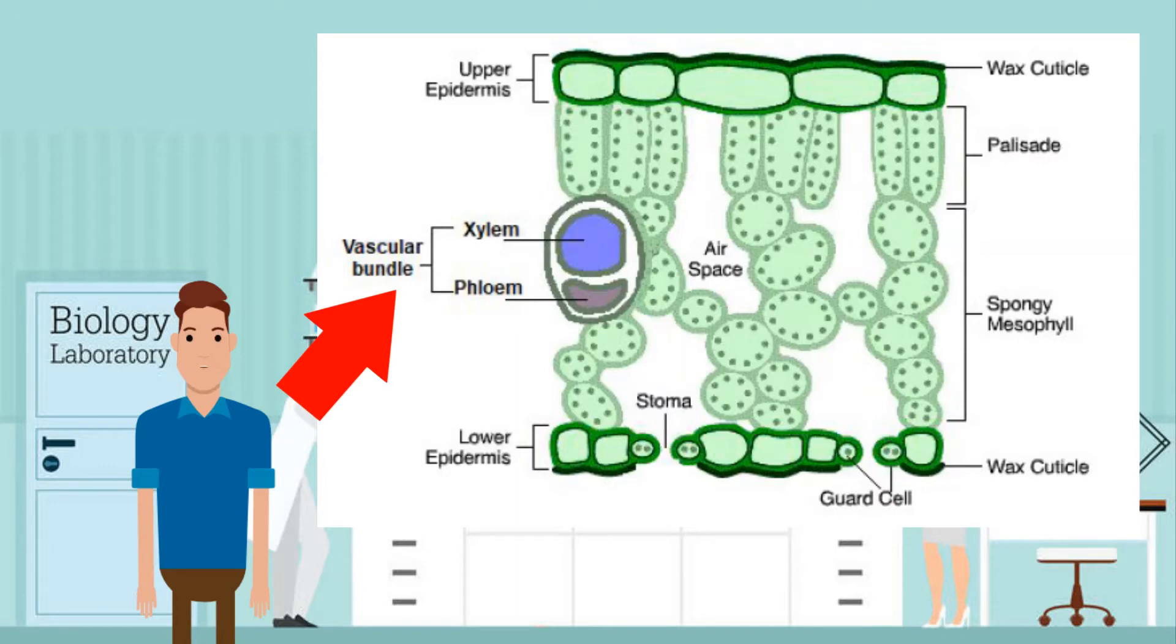Next, the vascular bundle. The bundle of tubes that are responsible for transport around plants includes xylem, which are vessels that transport water and mineral salts. Xylem walls are tough and hard so they are also used to support the whole leaf.